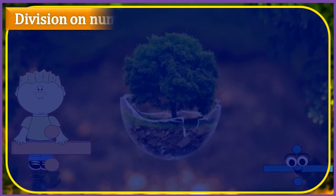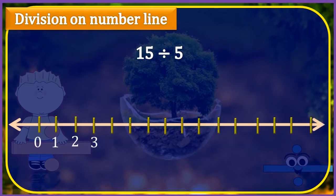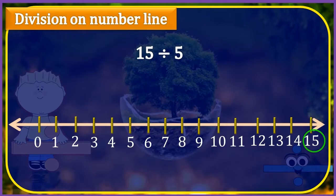Division on number line. Let us divide 15 by 5 on the number line. Draw the number line first. Mark 15 on that number line. It is being divided by 5, so we have to make such groups of numbers where each group has 5 numbers. Skip 5 numbers from 15 towards the left like this.